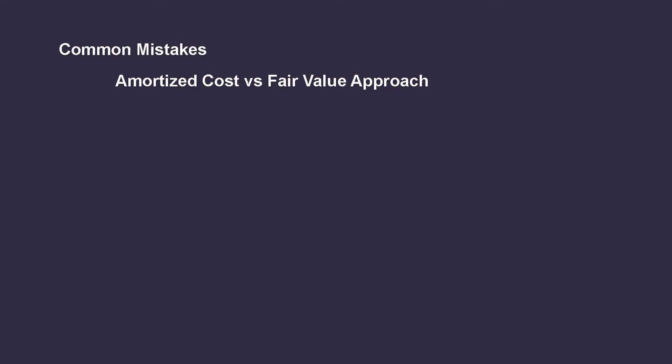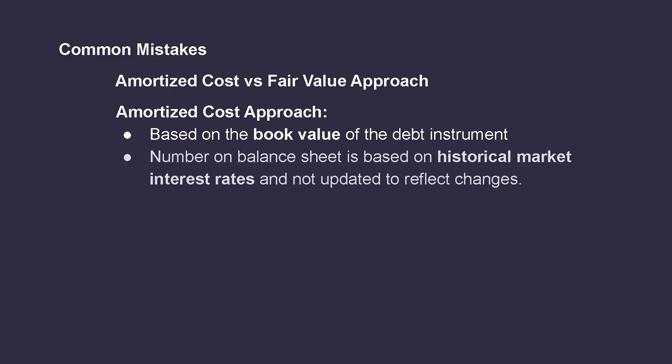Now that we understand a little bit more about long-term debt and where it comes from, let's talk about a common accounting misconception. Since the value of long-term debt changes over time on the company's balance sheet, there tends to be confusion on how to account for it, and there's more than one way to do it. Both US GAAP and IFRS allow companies to account for this type of debt using one of two approaches. They have the choice to use either the amortized cost approach or the fair value approach. Amortized cost is based on the book value of the debt instrument. The number recorded on the balance sheet is based on historical market interest rates and is not necessarily updated to reflect changes in the market. Since it's less complex and time-consuming, it's the most common approach used by companies.